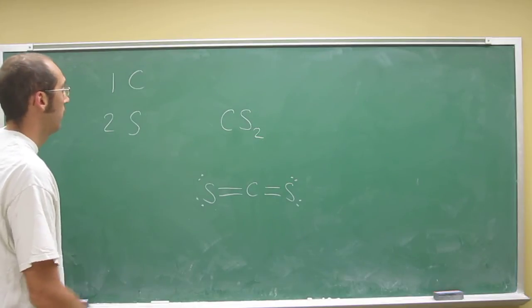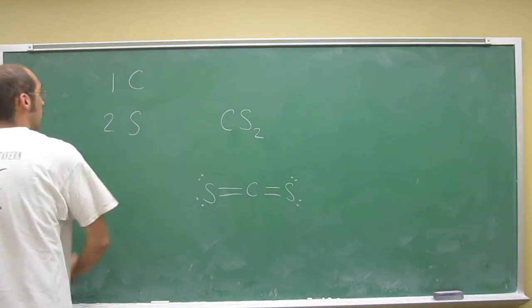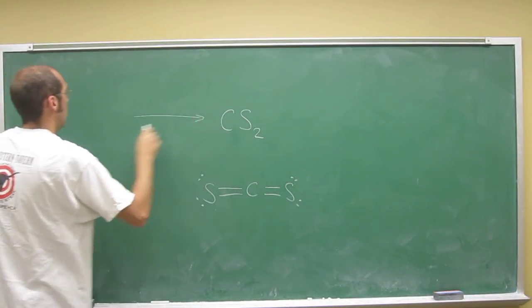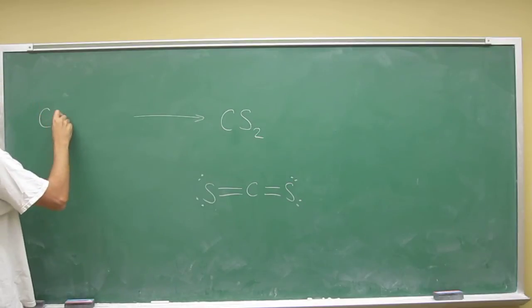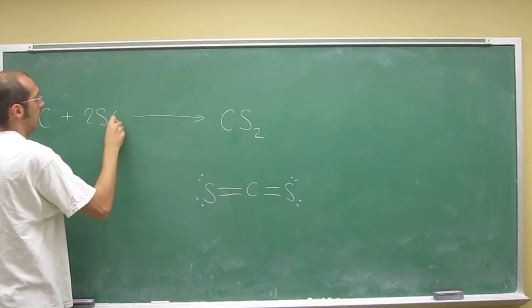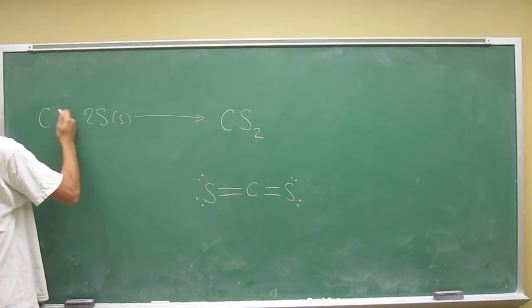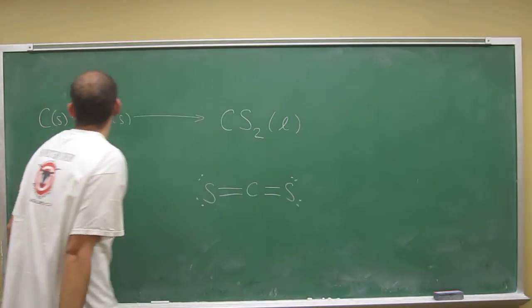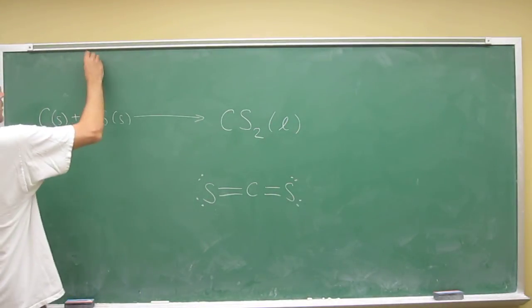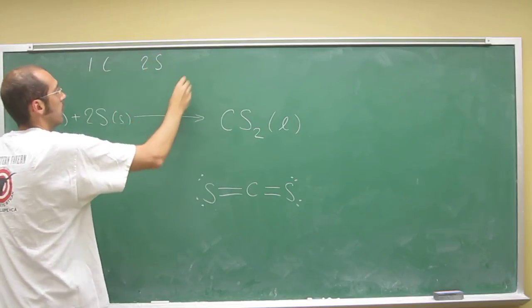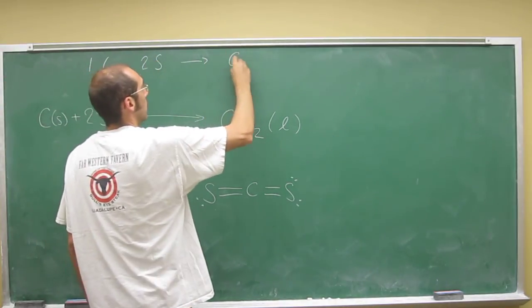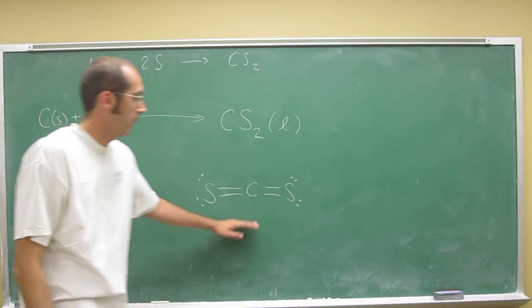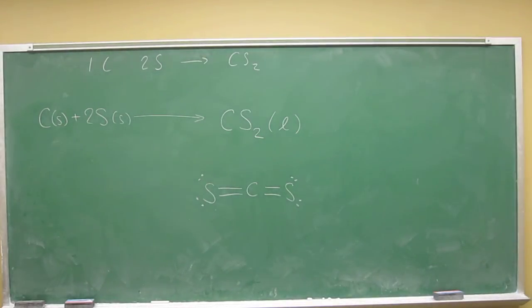So the reaction that we talked about is, and you'll learn why I'm writing it this way, but that's the reaction that we got. So one carbon, two sulfurs goes to carbon disulfide. That's what it's saying. That's what it looks like. We'll talk more about this down the road, down the road.